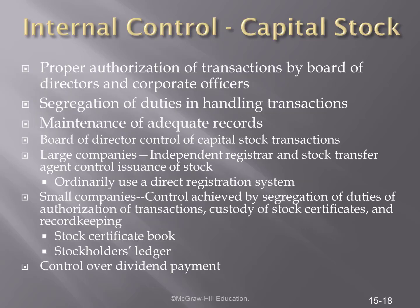The internal controls that we're looking for over capital stock include proper authorization, segregation of duties, and maintenance of adequate records. We want to see that the board of directors has control over capital stock transactions. If it's a large company, we would expect to see an independent registrar and stock transfer agent controlling the issuance of stock. In small companies, control may be done by segregation of duties related to the authorization, transactions, and custody. There should be a stock certificate book, stockholder ledgers, and controls over the dividend payments.